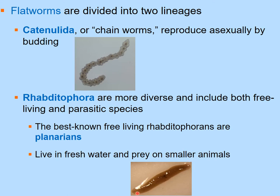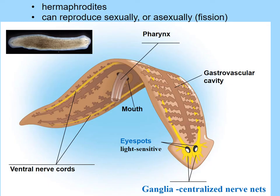Planaria have bilateral symmetry and a rudimentary central nervous system consisting of nerve nets and ganglia. They have light-sensitive eyespots. Their gastrovascular cavity forms a large, complex branching network along the length of the flattened body.